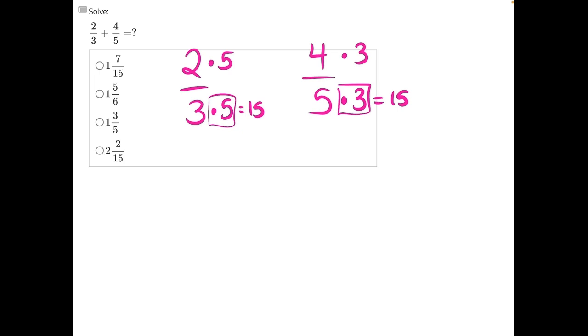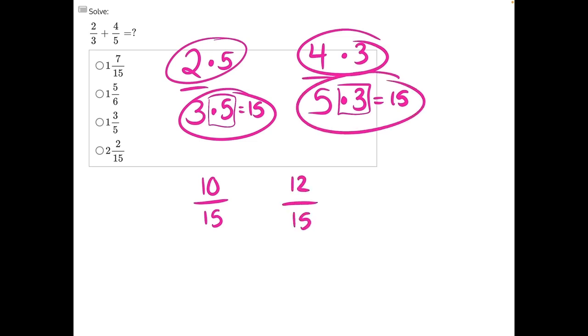Then we can complete this multiplication. We have 2 times 5 in this numerator, which will give us 10 over 3 times 5, which is 15. Then 4 times 3, which is 12, over 5 times 3, which is 15.